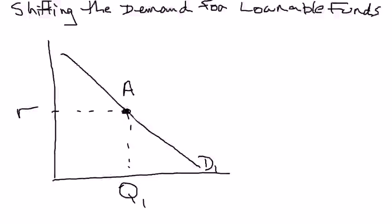So here's the thought experiment we're going to need to conduct. There's technically an infinite number of things that will cause the demand or the quantity demanded of loanable funds to shift. We've pretended that the real interest rate is constant and that we're starting off with a fixed demand curve — everything that could possibly influence how much firms want to borrow is fixed, and the real interest rate happens to be R. If the real interest rate is R and this is my demand curve, I find the quantity demanded of loanable funds by going from R over to my demand curve and down — that's the quantity.